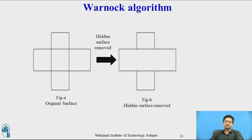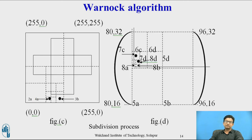This is the example. Figure A shows the original surface, and after removing the hidden surface it is shown in figure B. In figure B you can identify which surface is above or which object is above and which surface is below. To this original object we are adding the window from 0,0 to 255,255. The object is added and this object is divided into four parts. The window is divided into four parts, so that object also gets divided into four parts. Some part of the object lies in the first window from 0,0.